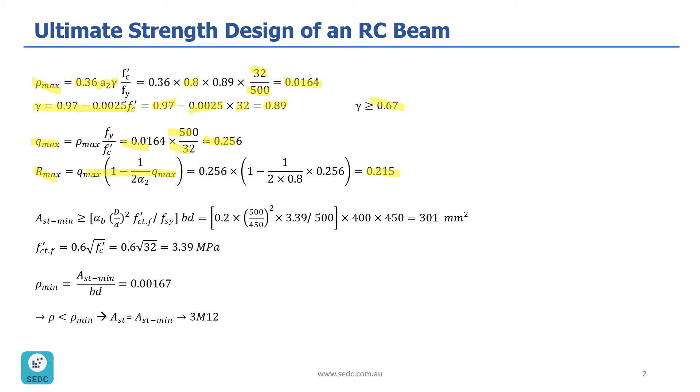The next step is to calculate Rho min. For that, we need to calculate AST min, which is alpha B times D. So, alpha B is 0.2. D is total height, which is 500. And this D is 450.